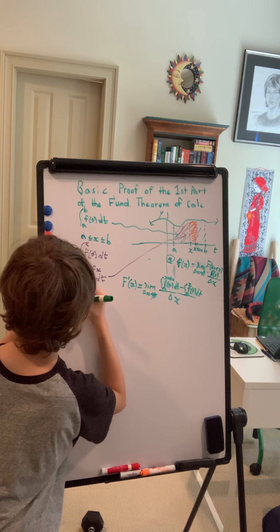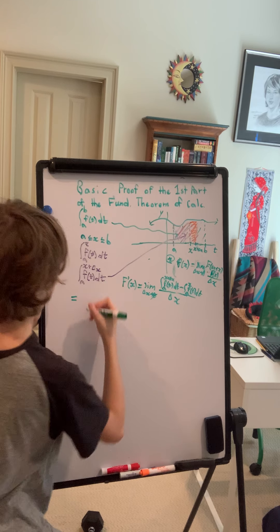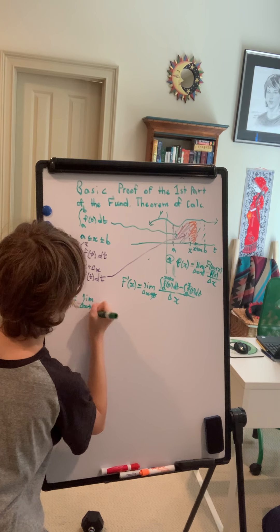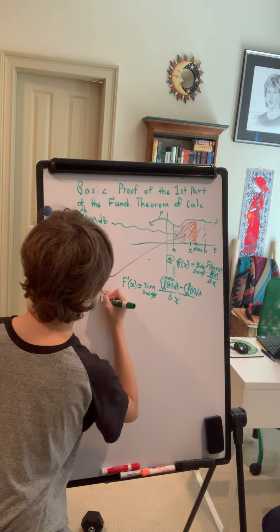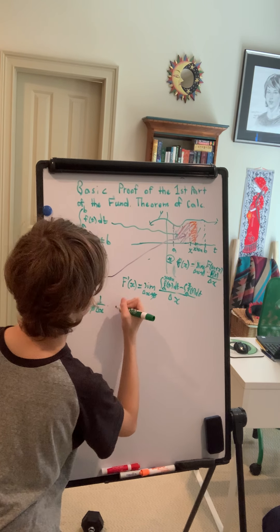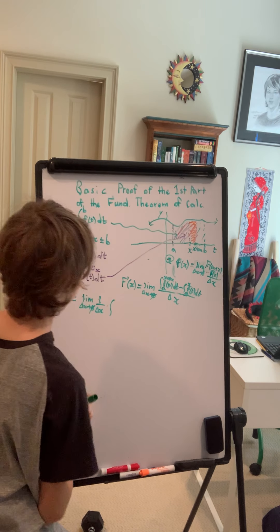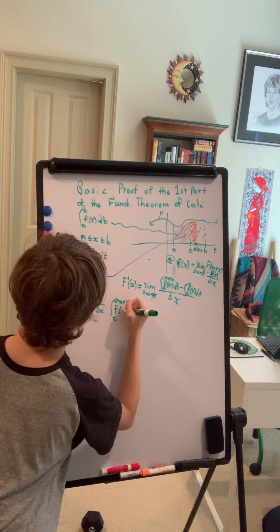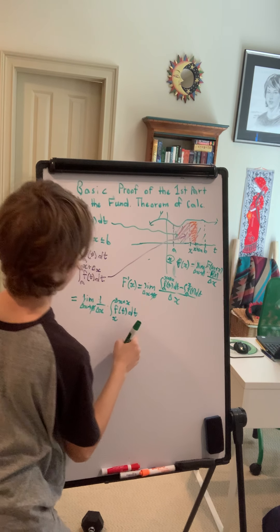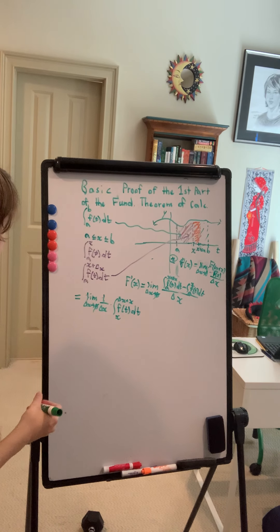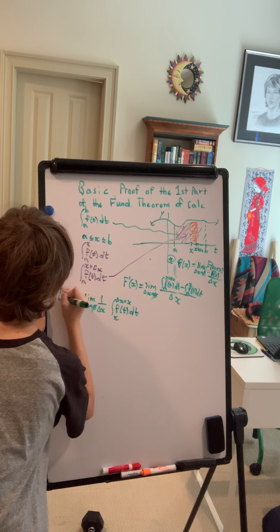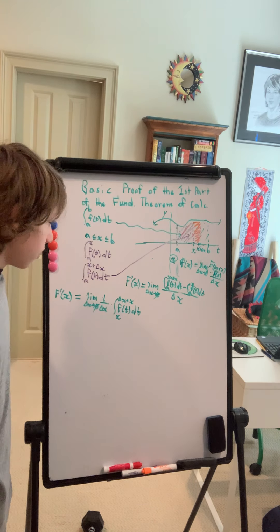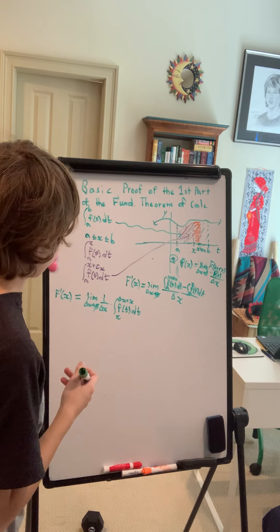So let's simplify this. This is going to be equal to the limit as delta x approaches zero of one over delta x, obviously I'm just rewriting this delta x in the bottom, times the integral from x to x plus delta x of f of t dt. This looks quite a bit more simple. You know I'll write this out here. Okay. Well now what? It might seem like we're stuck but actually what we can do is we can make the relation.